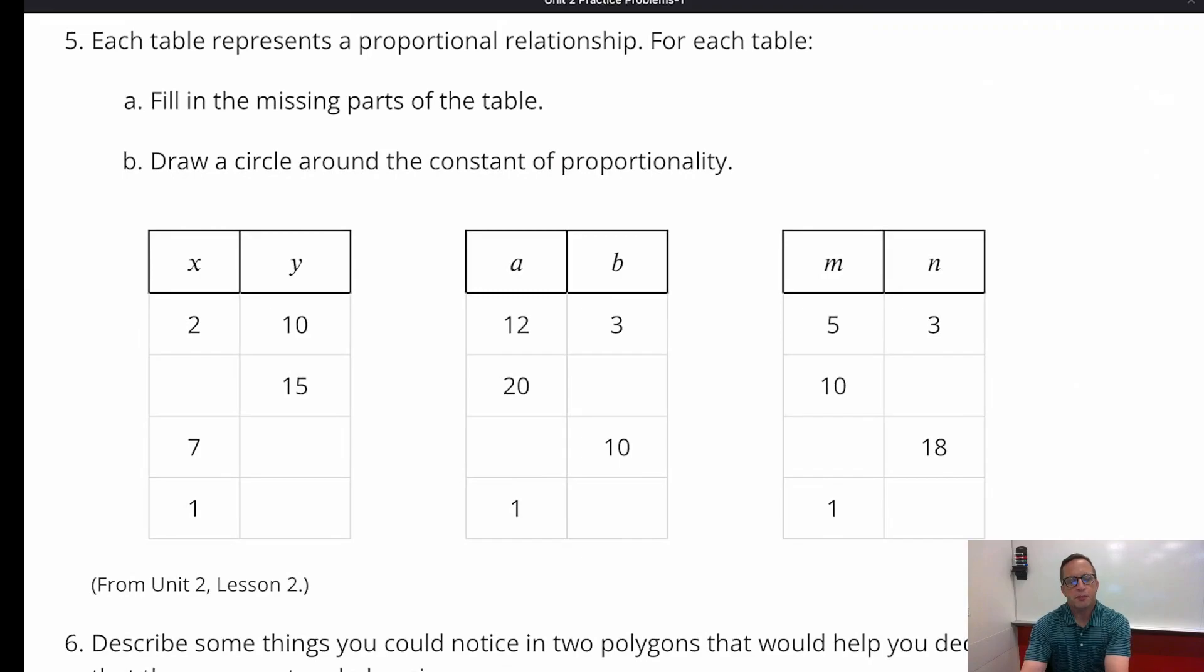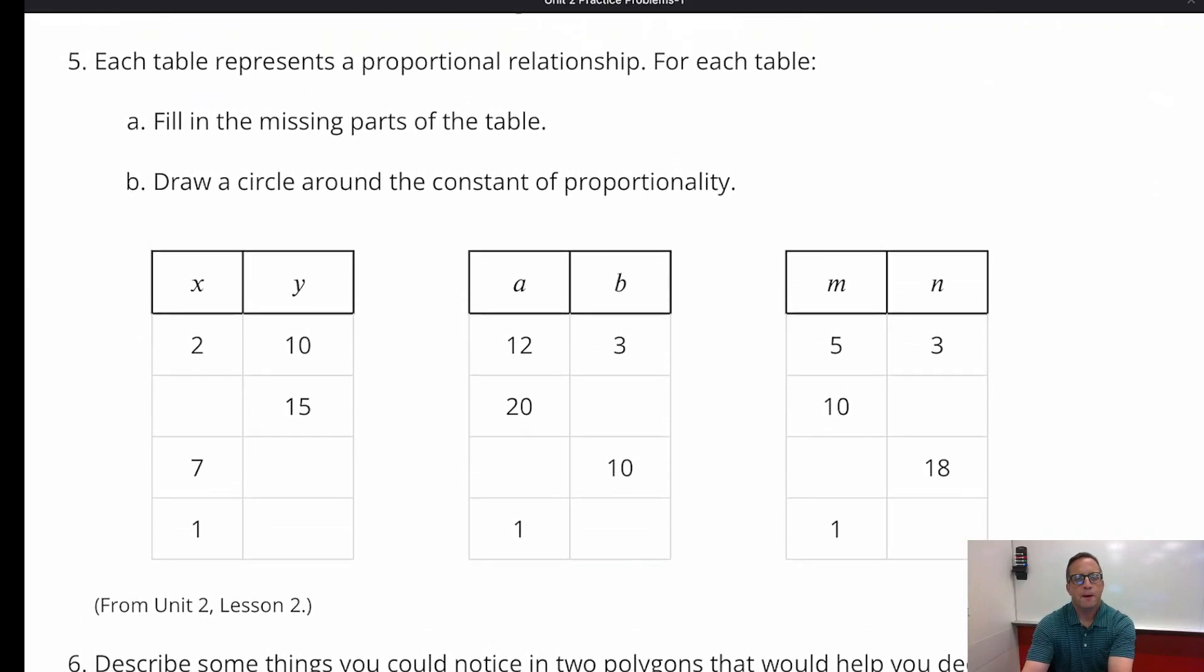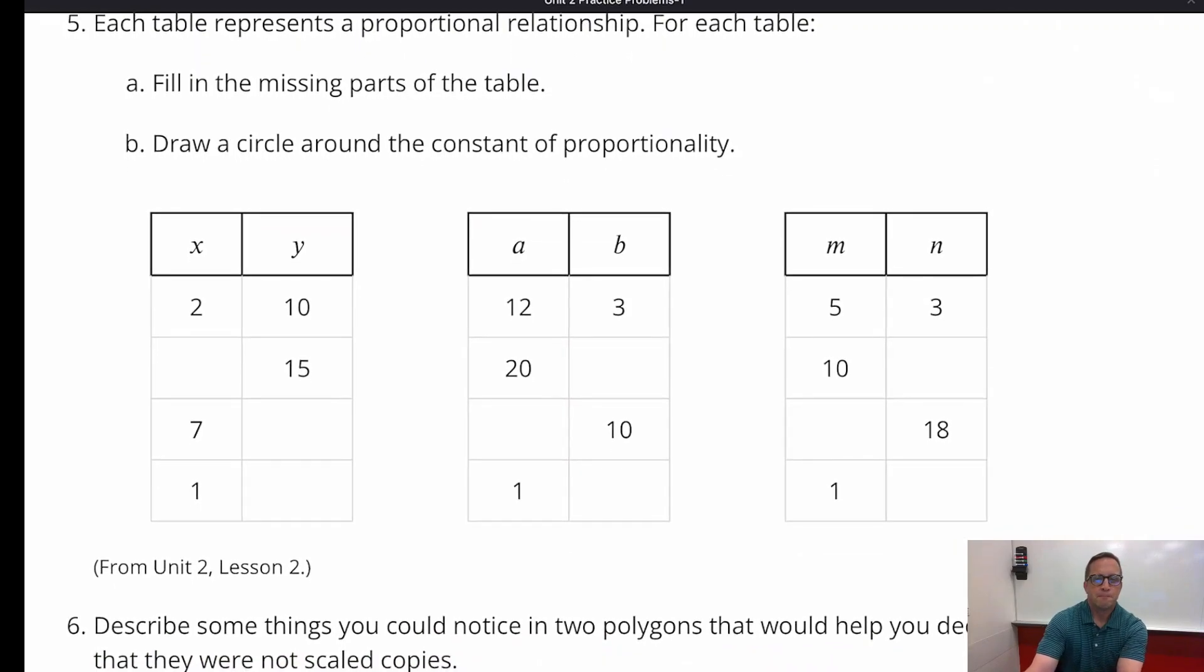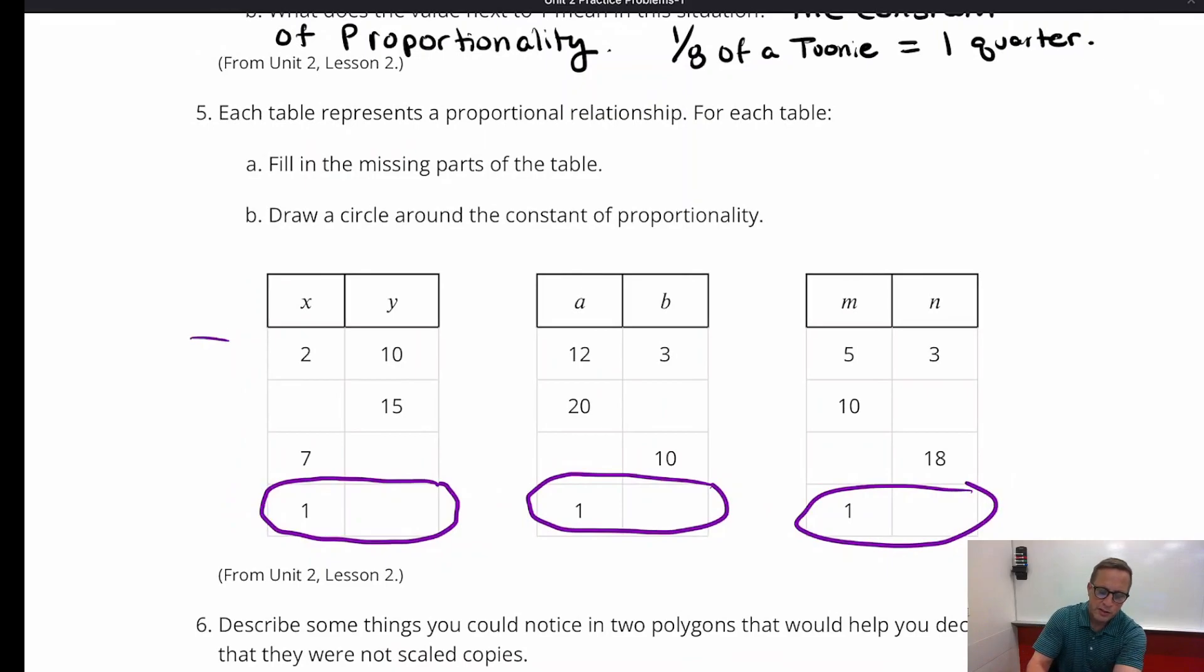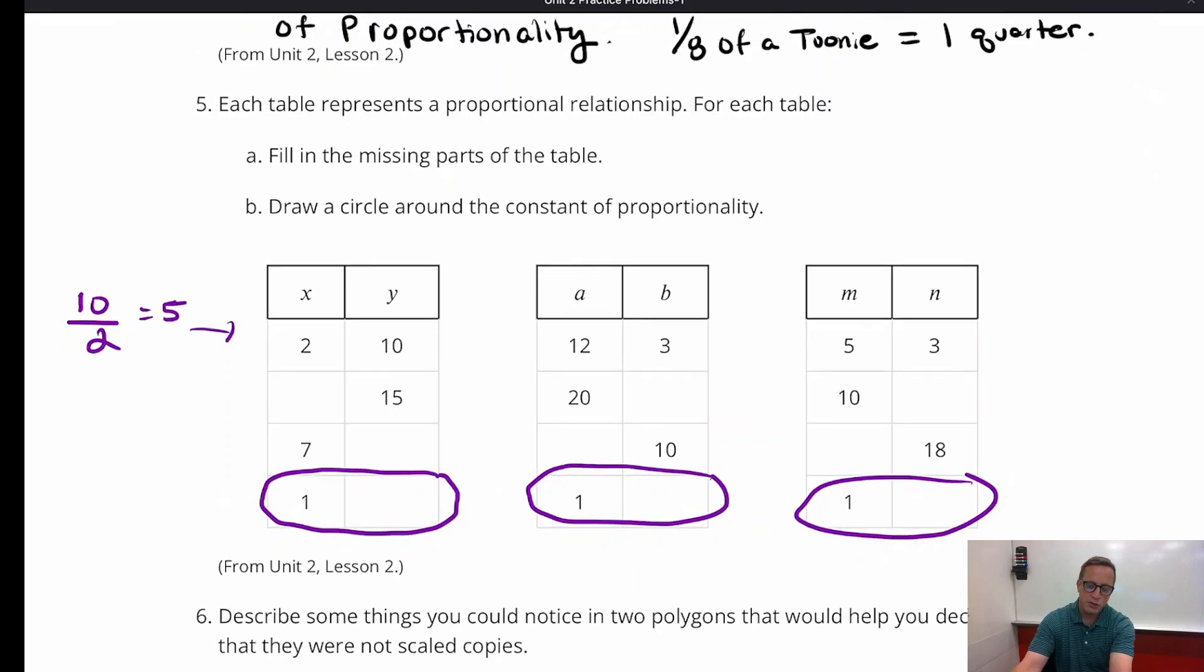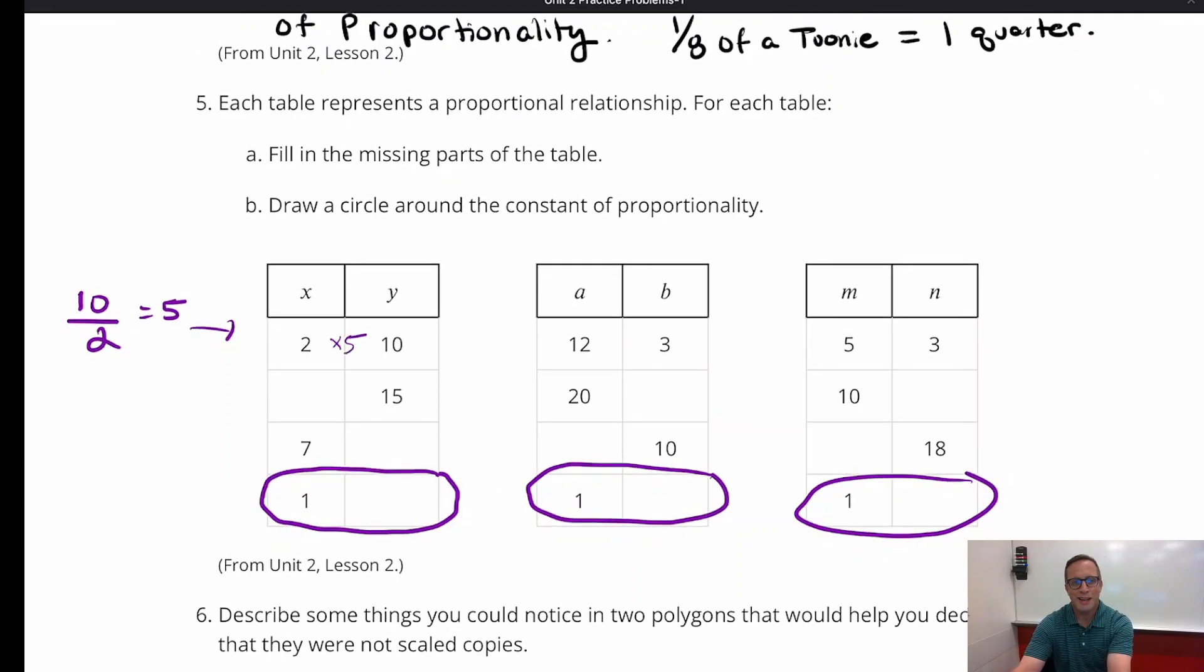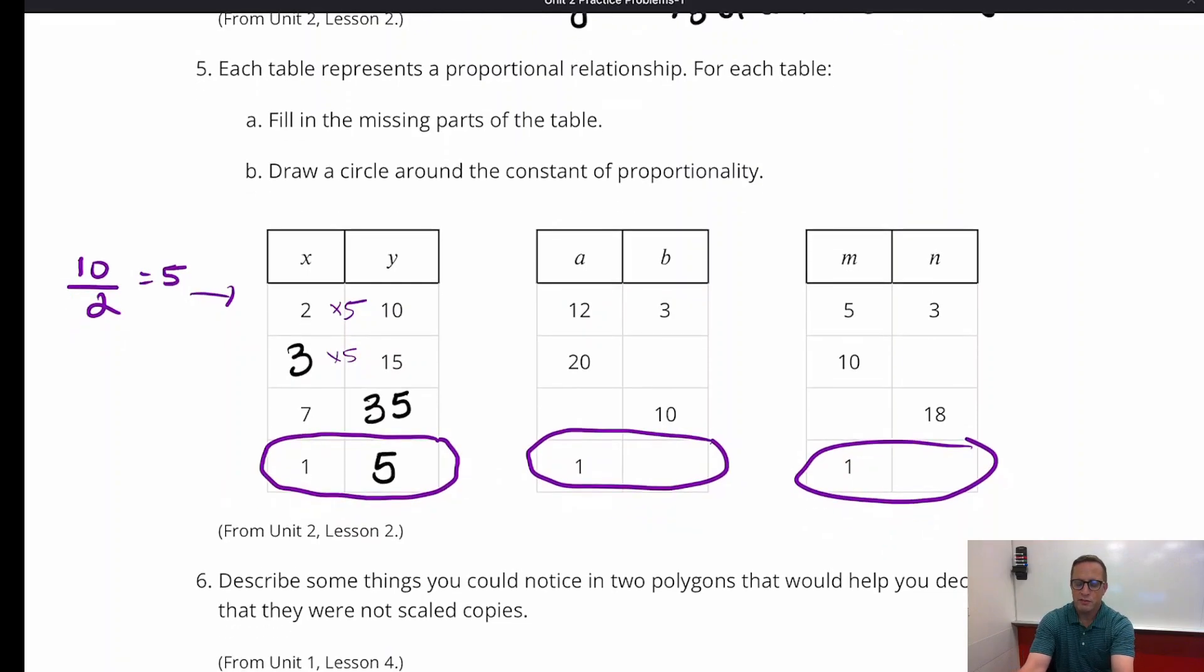Now, each table represents a proportional relationship, so that's out of the way. Fill in the missing parts. Draw a circle around the constant of proportionality. Now I just got done saying the constant of proportionality is wherever the x equals 1. So I haven't even solved anything yet, but I guarantee you the constant of proportionality will be there on that table, there on that table, and there on that. So that's all we've got to do. This one's pretty easy. We're just going to do 10 divided by 2. 10 divided by 2 is 5. So there's your constant of proportionality. So that means we're multiplying by 5. 2 times 5 is 10. So what times 5 is 15? Well it's got to be a 3. 7 times 5 is 35. 1 times 5 is 5. So there you go.